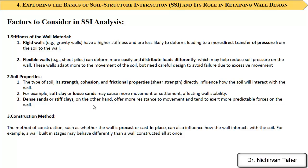Flexible walls help distribute loads differently and may help reduce soil pressure on the wall. Another factor affecting SSI is the properties of the ground or type of soil. Soft or loose clay may cause more movement or settlement, affecting wall stability. Dense sand or stiff clay, on the other hand, offers more resistance to movement and tends to exert more predictable forces on the wall.